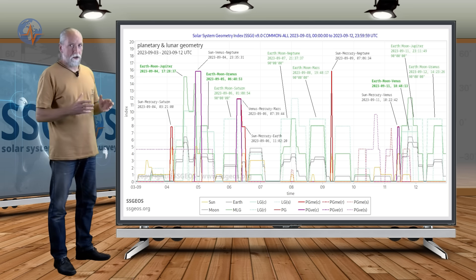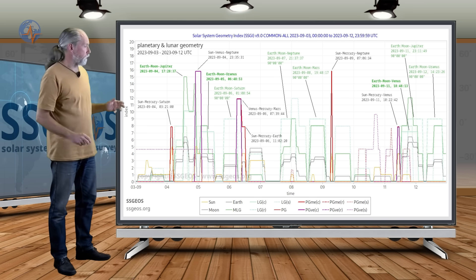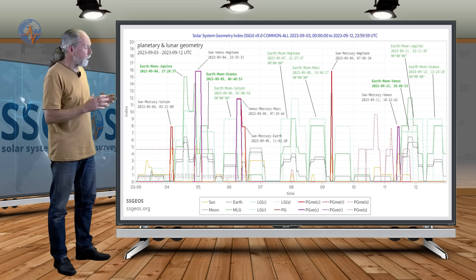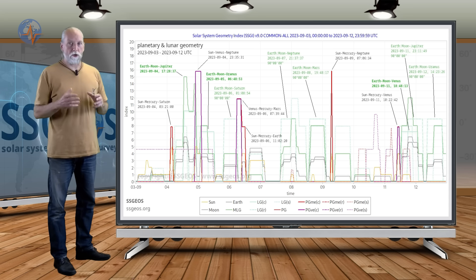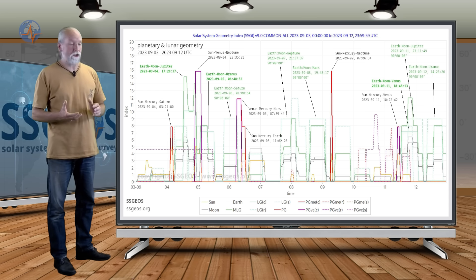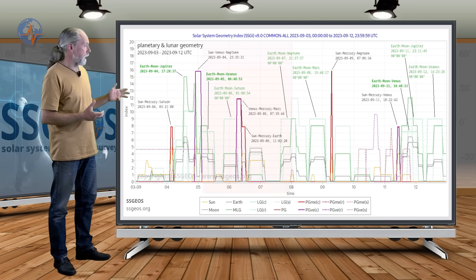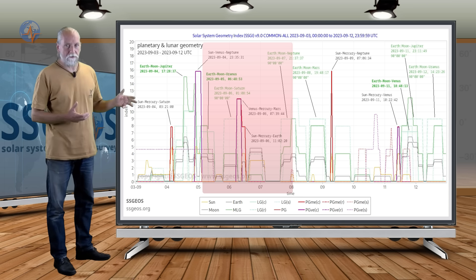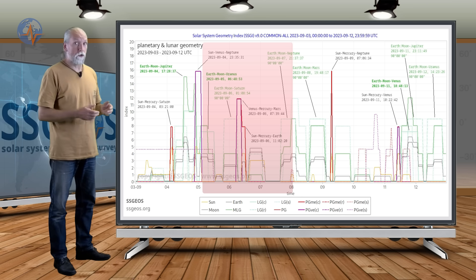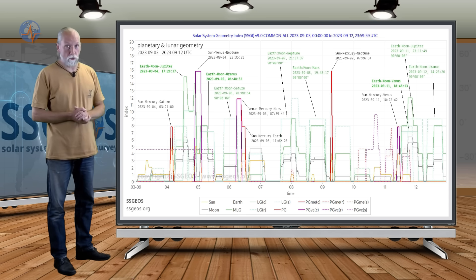We also have two lunar conjunctions, also on the 4th. As a result, we could see an obvious seismic increase again, a clustering most likely from the 5th to the 7th. It could already be tomorrow on the 4th with the planetary and lunar conjunctions.